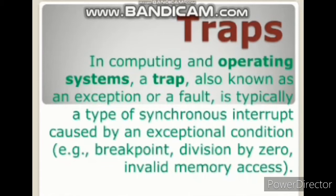The CPU generates a trap when any program does not make any sense to the CPU. For example, when we write a program and there is an instruction in which any number is divided by zero — we know we cannot divide any number by zero, it will produce an error. So the CPU simply generates the trap because that calculation does not make any sense. In the same way as with an interrupt, when a trap occurs, the control goes to the operating system.